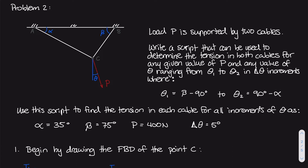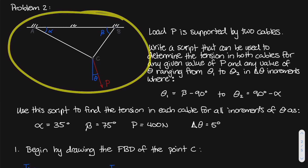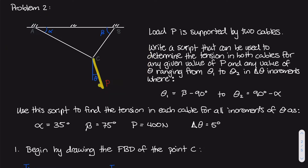This is problem number two, and in this problem we are dealing with a system that is in static equilibrium. We have a force P that is generally acting downwards, and it's supported at point C by two cables — cable B and cable A. These cables are tied to a horizontal support at points A and B, making certain angles alpha and beta from that horizontal line.